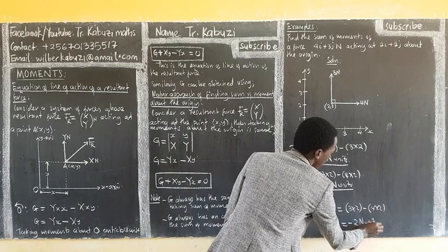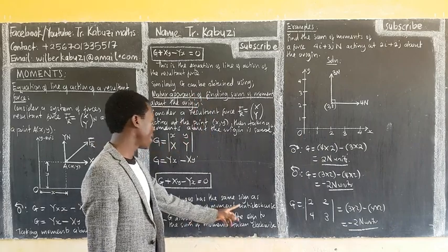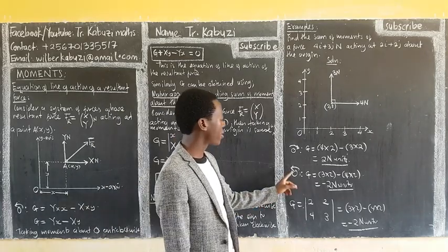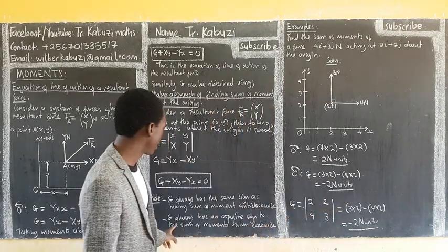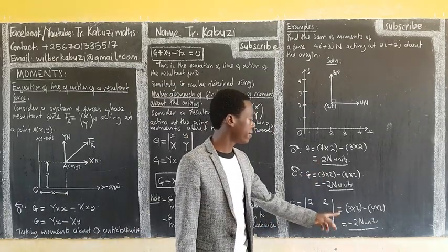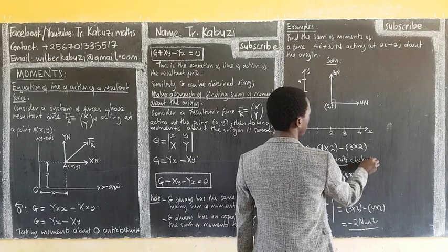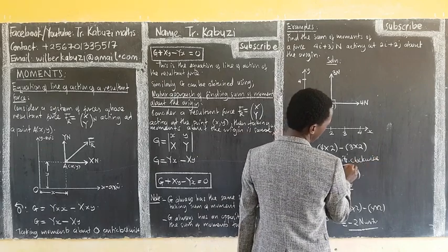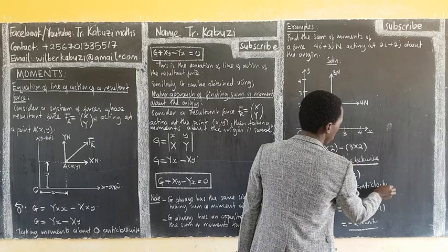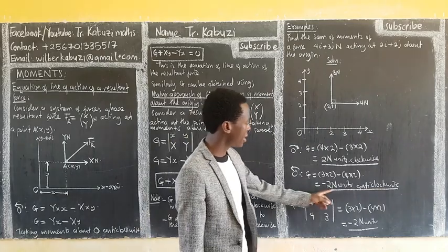You can see that g always has the same sign as taking moments anticlockwise — the result is negative 2, same sign. And g has an opposite sign to taking moments clockwise, which gave positive 2. So the sign of the determinant matches the anticlockwise convention, and is opposite to the clockwise result.